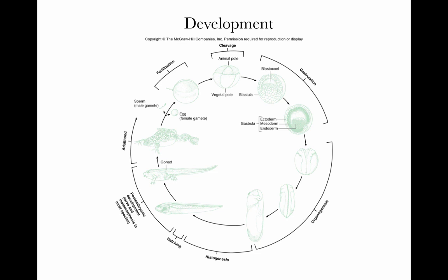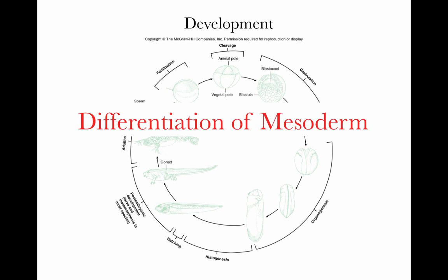Welcome to this web lecture on the differentiation of mesoderm. In this web lecture we're going to fill in the gap of what happens during development after gastrulation, concurrent with neural tube development or neurulation, and prior to organogenesis — the development of the organs.